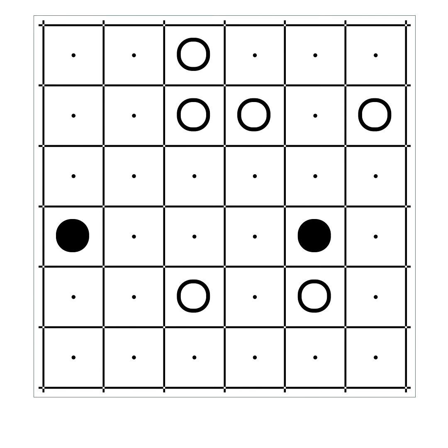The goal is to create a single closed loop which goes through all circles according to the rules. A solved puzzle looks like this.